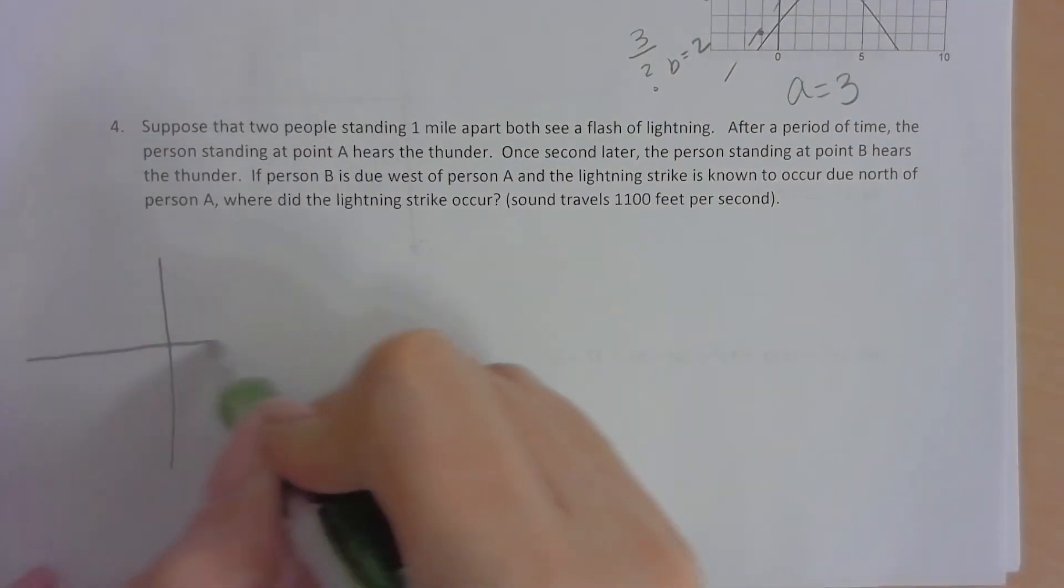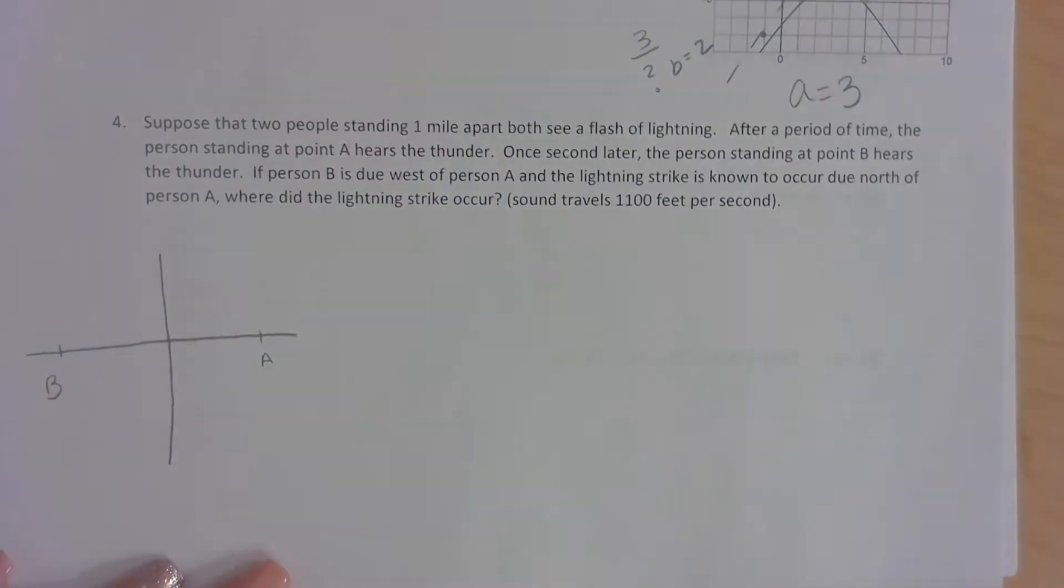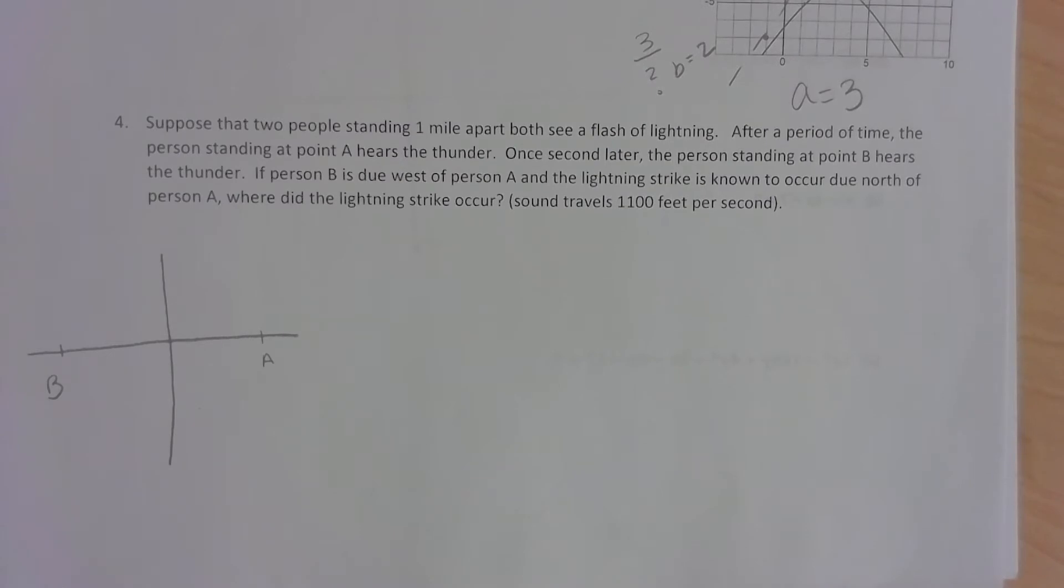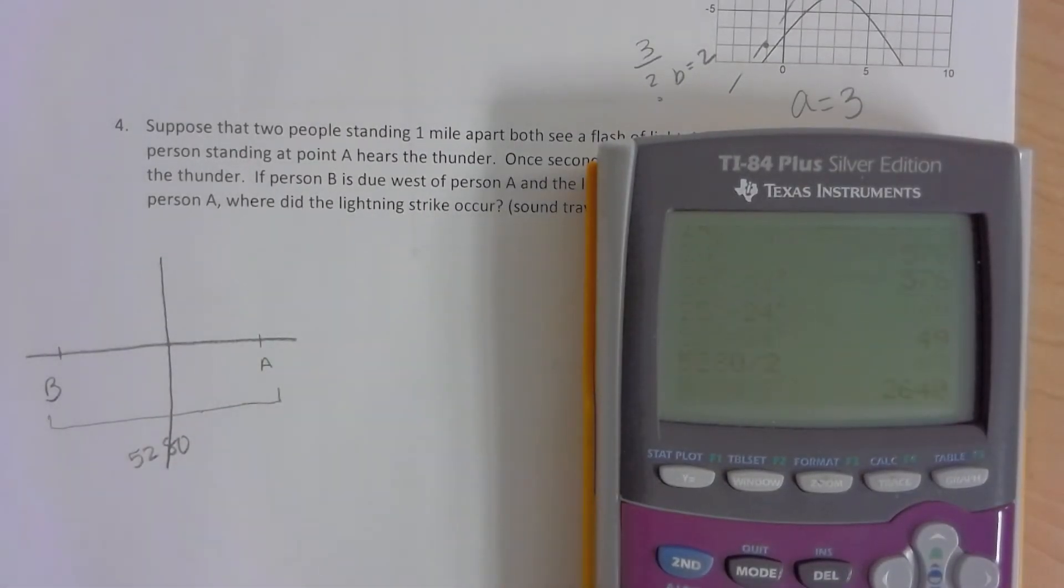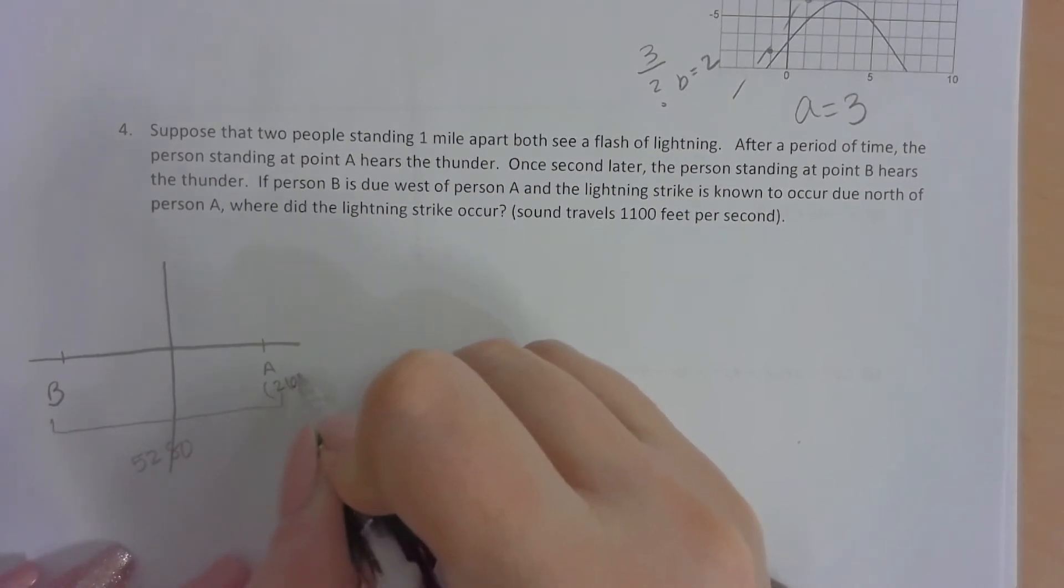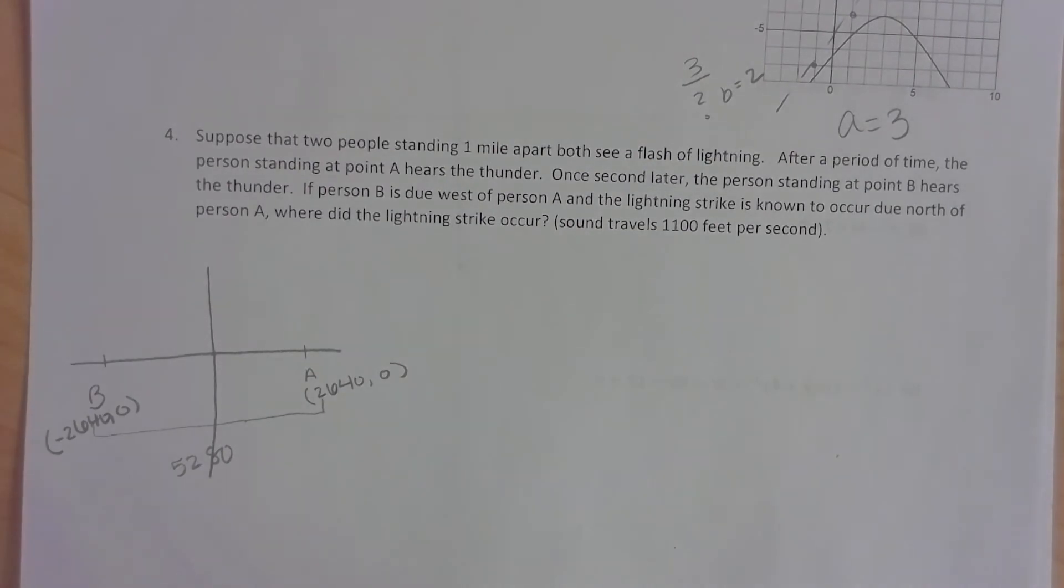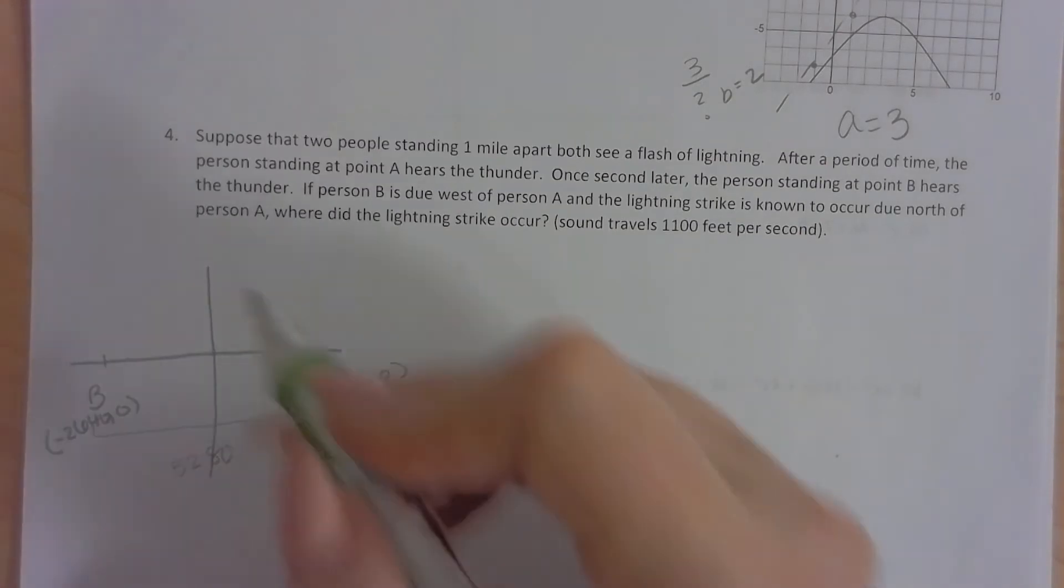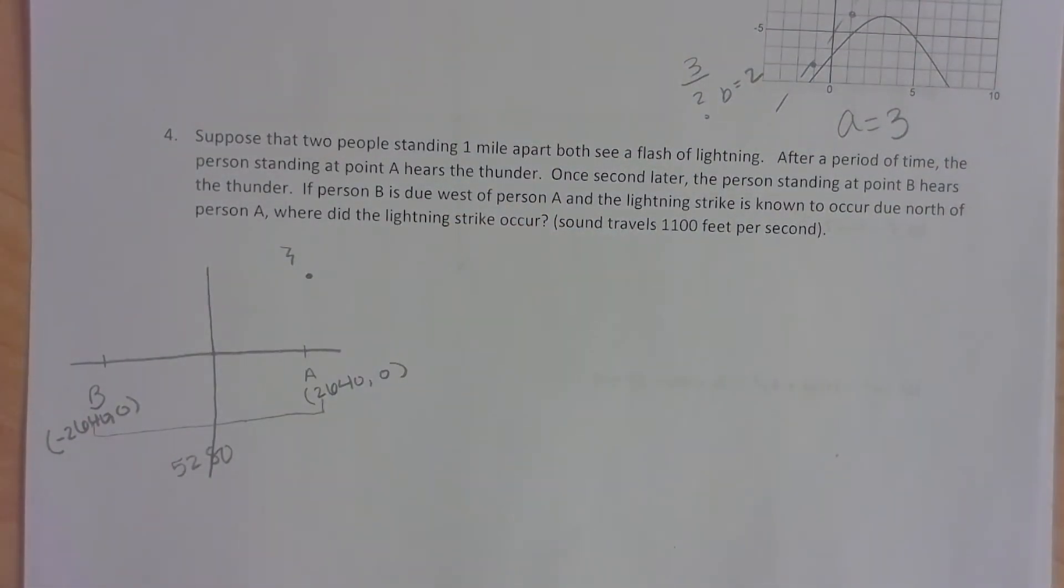So let's draw a visual here. So we have person A and person B. And it told us B is due west of A. Now we know that they're standing one mile apart. Now if we look here, sound travels at feet. So let's talk about feet instead of mile. So if we know their whole distance here is 5,280 feet, that makes each of these half of that, which would be 2,640 in each direction. So we could say person A is at 2,640 comma 0 and then person B is at negative 2,640 comma 0. So we have their ordered pairs. And then we also know that the lightning strike is due north of person A. So there's our lightning strike right there.